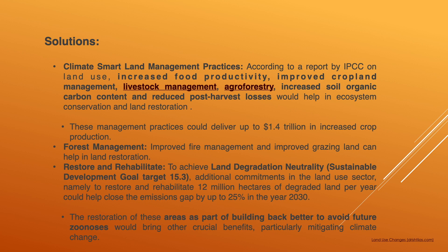Forest management, improved fire management, and improving grazing land can help in land restoration. To achieve land degradation neutrality — a Sustainable Development Goal target — restoring and rehabilitating 12 million hectares of degraded land per year could help close the emission gap by up to 25% by the year 2030.